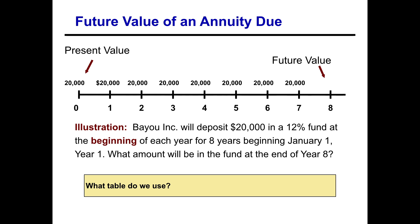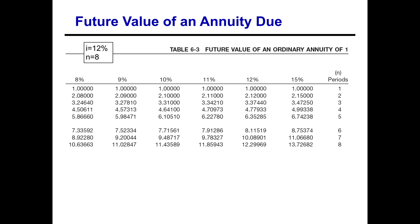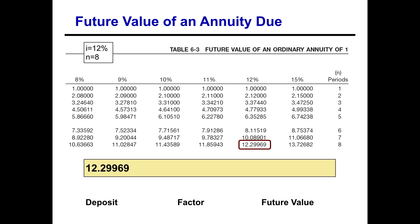There are no future value of annuity due tables, so we have to use the future value of ordinary annuity tables to solve this problem. Our interest rate is 12% and we have eight periods. We find the 12% column, scan down to eight periods, and find the factor to be 12.29969.